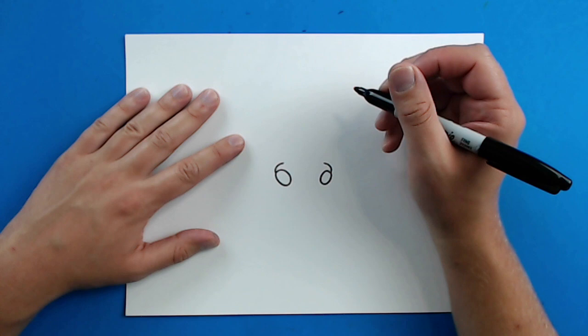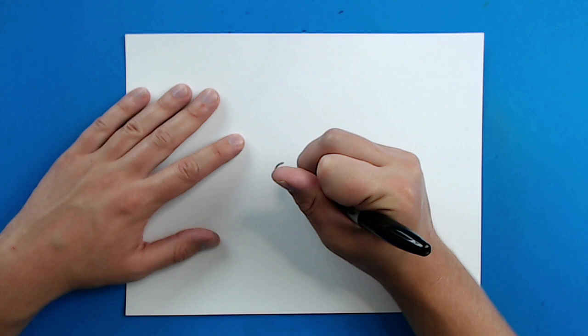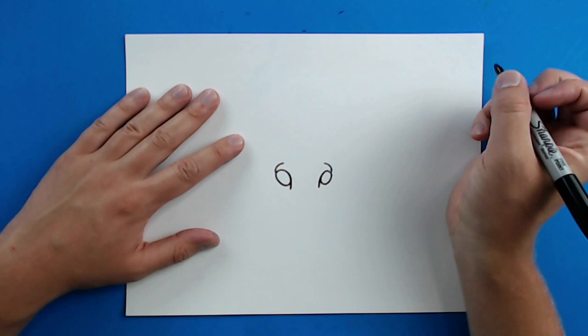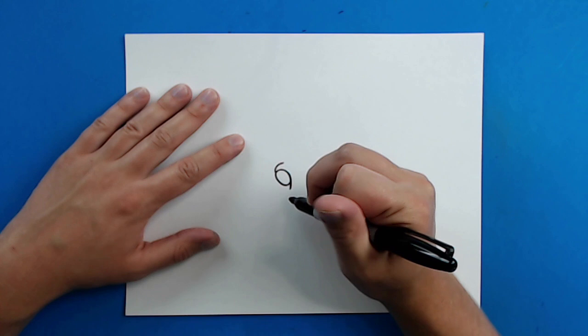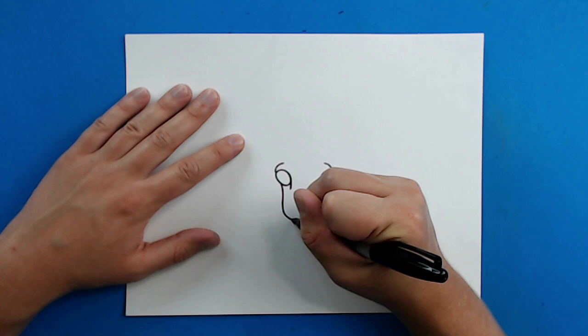I'm going to start right here and draw a line that kind of comes down. Then starting right here, I'm going to draw a line that just kind of curves down, goes around, and then comes back up to this eye.